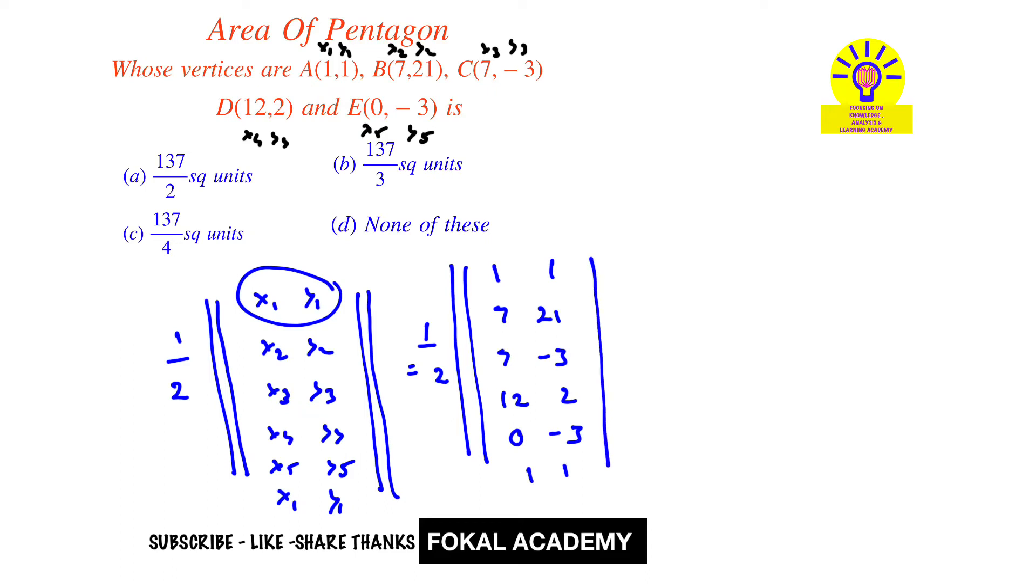Now how to simplify here for getting the area of pentagon. So let's observe carefully here, half of... So first of all, product like this and add everything. So it becomes 21, next 14, next 36, plus 0.